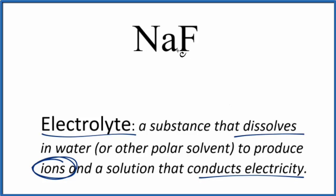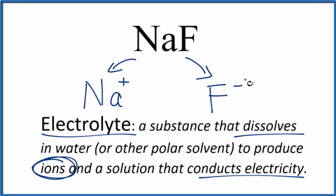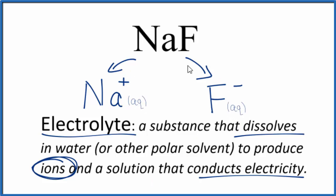The question is whether NaF is soluble — if it dissolves in water and produces ions. If you know your solubility rules, compounds with sodium are very soluble, so we expect this would dissolve in water. We'd end up with the sodium ion Na⁺ — sodium is in group one so it'll always be one plus — and then the fluoride ion F⁻. We put aqueous after these since they are dissolved in water.